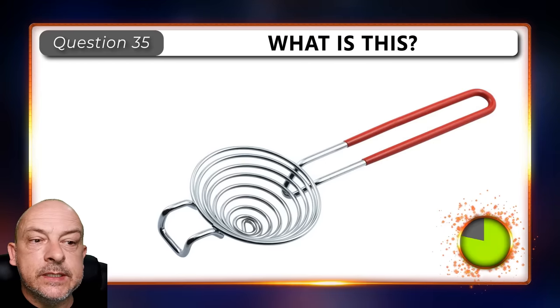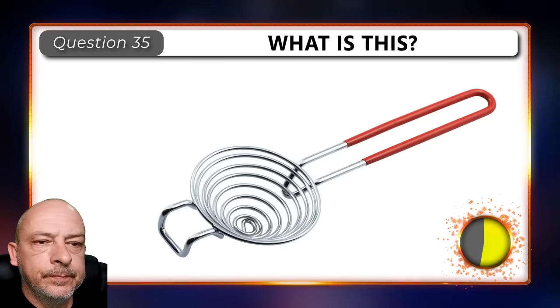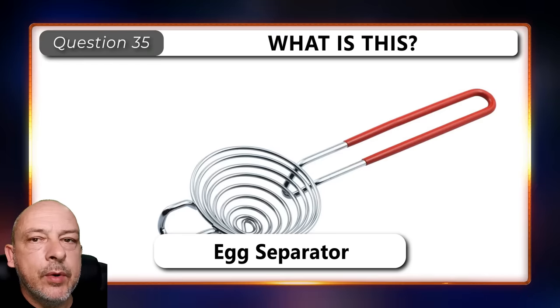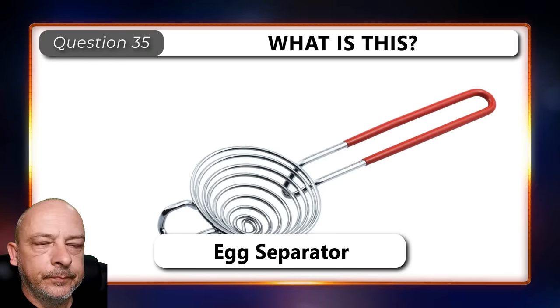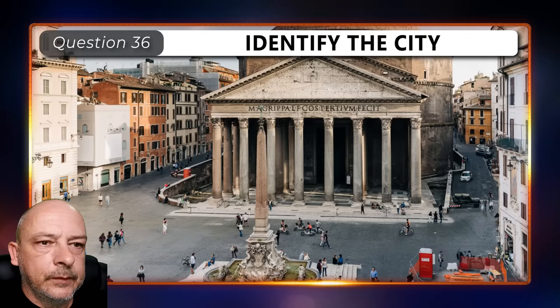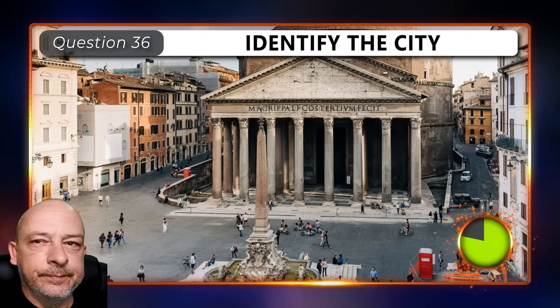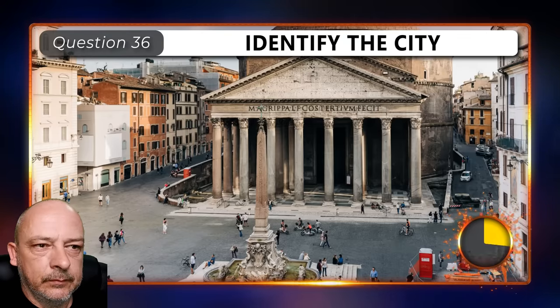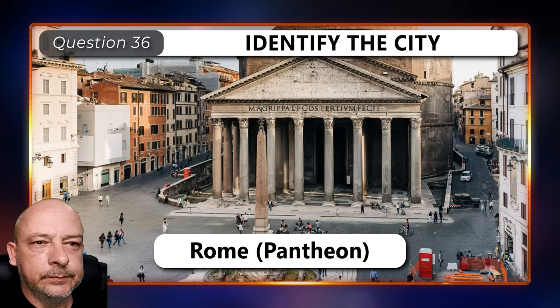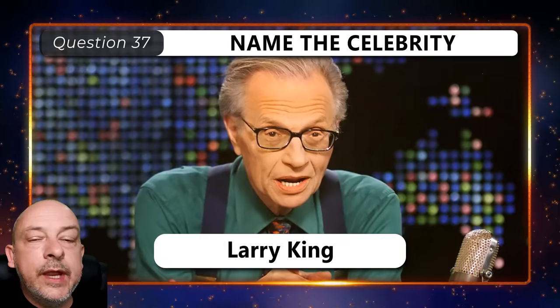What instrument is this? It is an egg separator. Which city is this? Rome. Who is this celebrity? Larry King.